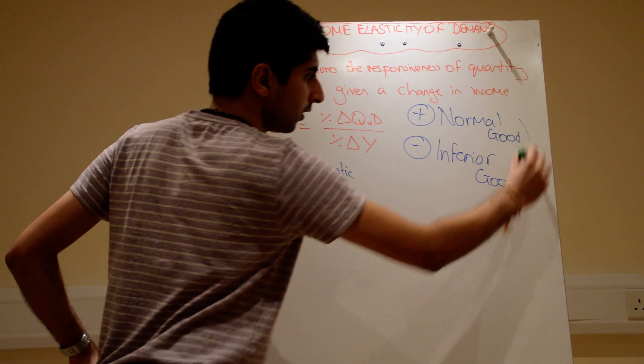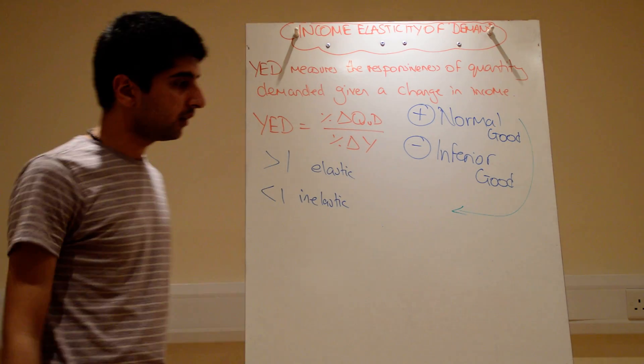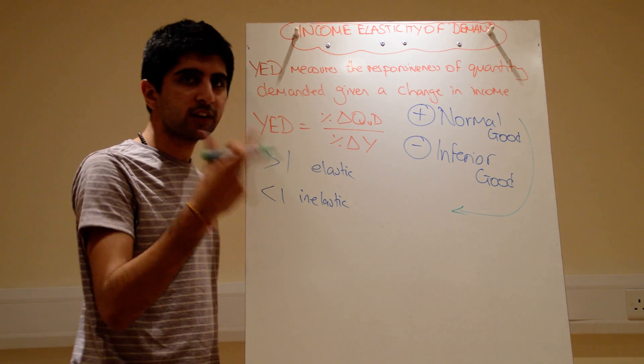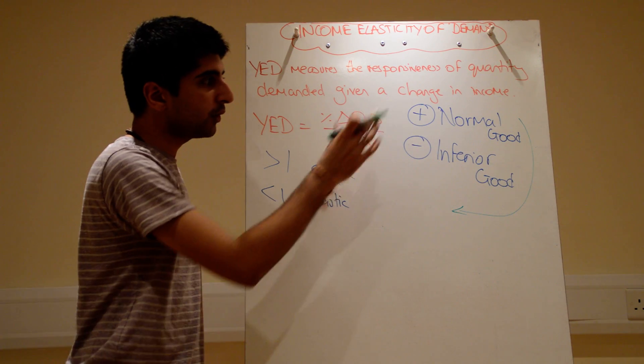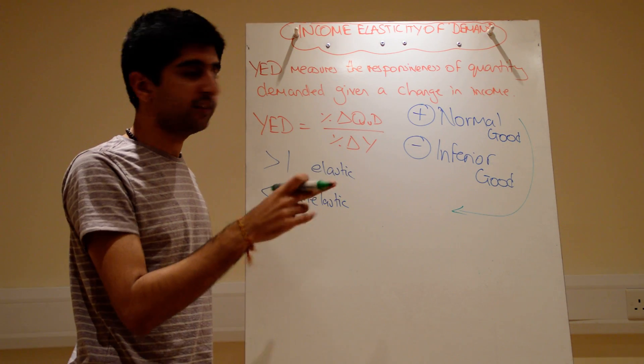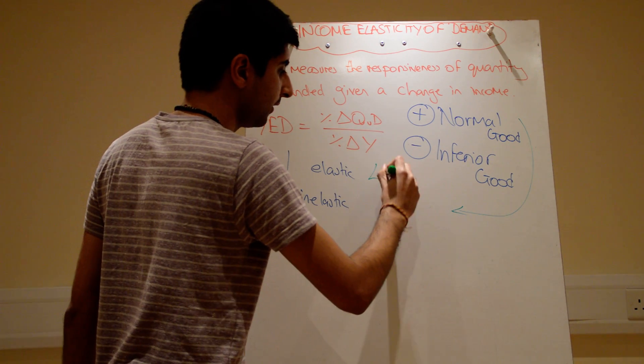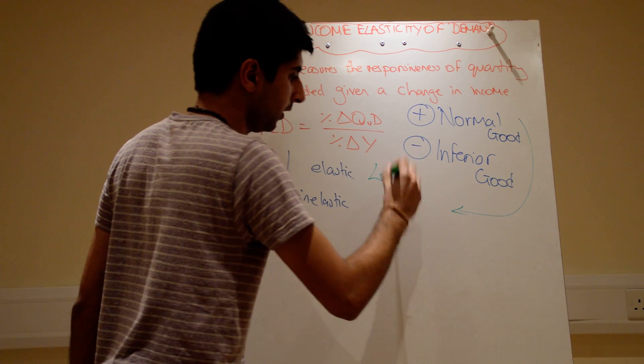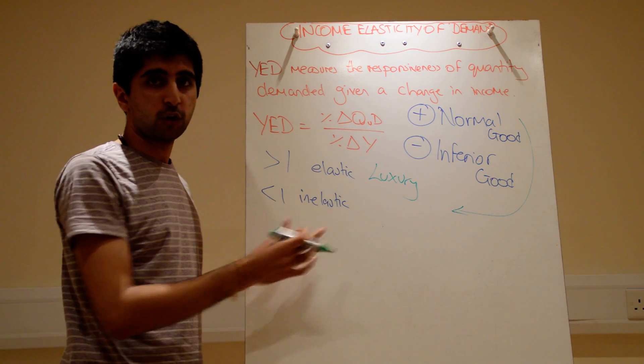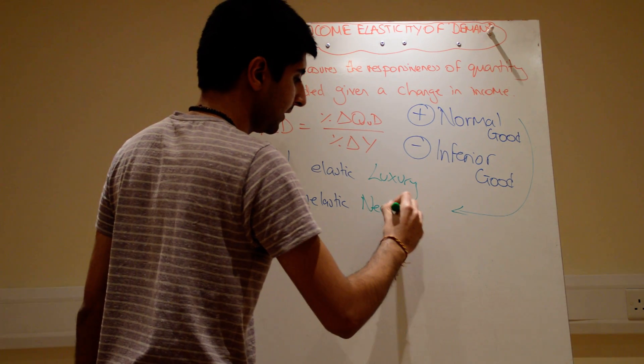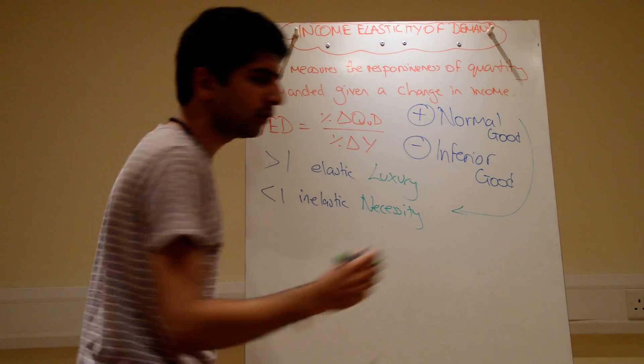So for normal goods, to interpret the figure, we now look at greater than one or less than one to determine what type of normal good they are. If you have a normal good, if you have a positive YED figure that's greater than one, it's elastic, then we see that that good is a luxury good. Whereas if your normal good has a YED figure less than one, we would call that good a necessity. And that kind of makes logical sense.